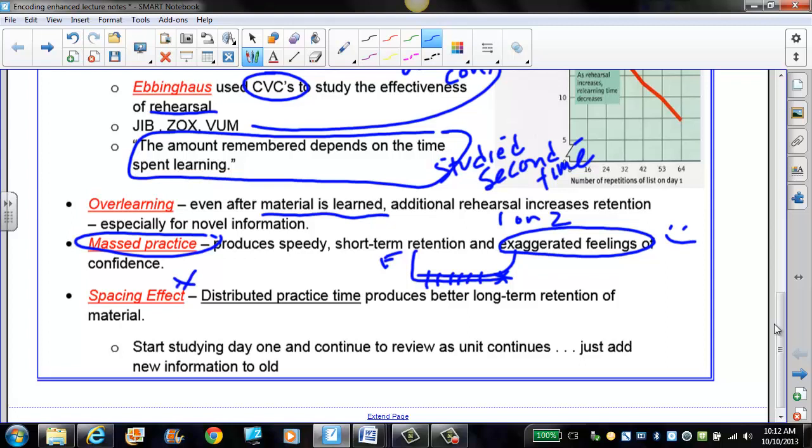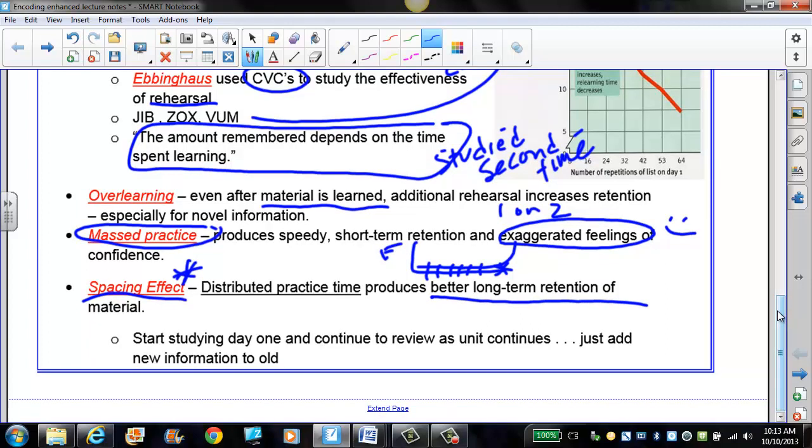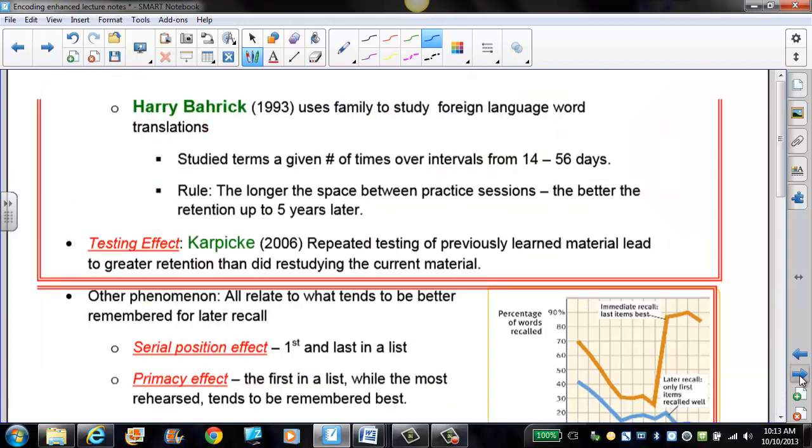What is impressive is the spacing effect. Distributed practice produces better long-term retention. So, for a unit like this, you should start studying on the first day. And as you continue to do your work, you want to go back to the previous day and look over your Cornell notes. For maybe 10 minutes or 15 minutes even is going to produce long-term knowledge that will stay and last longer.